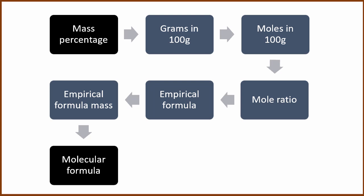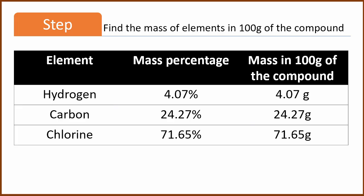Let's do the first step. How many grams of individual elements are there in 100 grams of the compound? You might ask why we picked 100 grams. We can pick anything, but if we pick 100 grams, it's easy to convert — the percentages 4.07, 24.27, and 71.65 directly become grams. But you can pick anything you want, like 1000 grams also if you want.